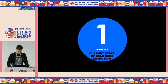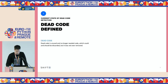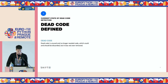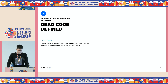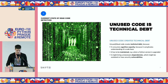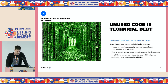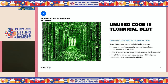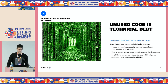Let's begin with the definition of dead code, because there might be different definitions. For me, dead code is no longer used, no longer needed code which should have been removed but was not. So this code is still in the code base. This type of unused code creates technical debt because it consumes cognitive capacity — you sometimes have to understand it. It also consumes time because unused code has to be maintained; for example, when a Python version gets upgraded, you still have to update all your code base including unused code.